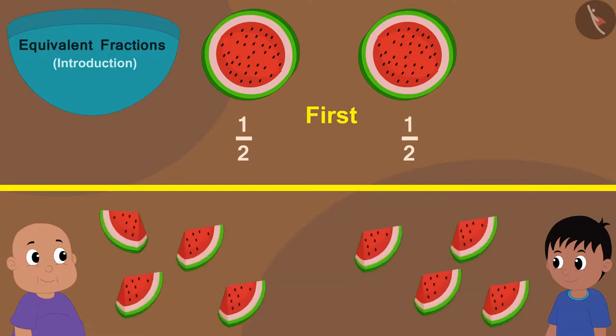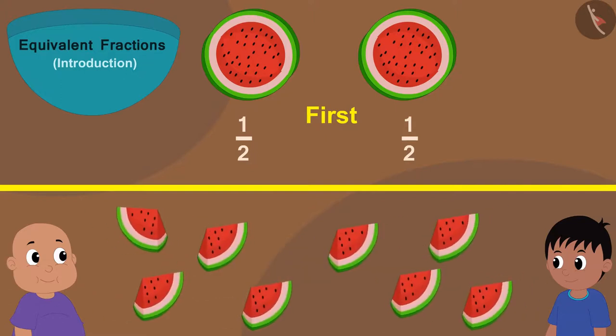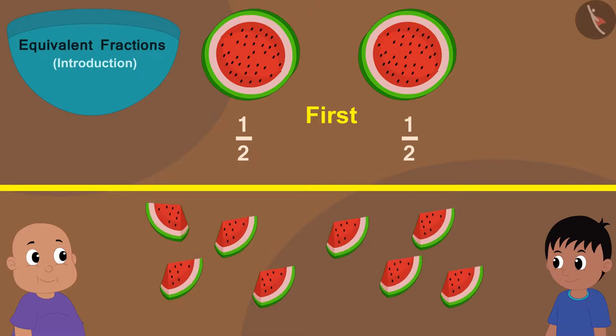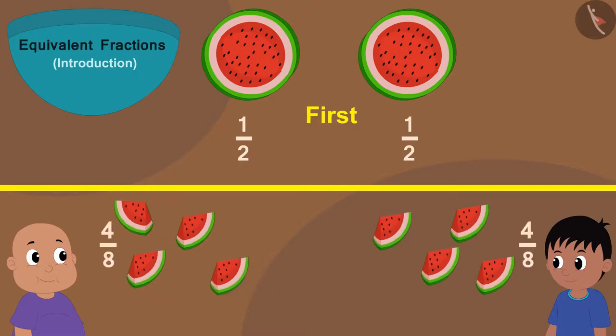Yes! Now, both will get four parts each, that is, four parts out of eight. We can write the fraction of the watermelon given to Raju or Bablu in this way as four by eight. Because both are getting four parts out of the total eight parts.